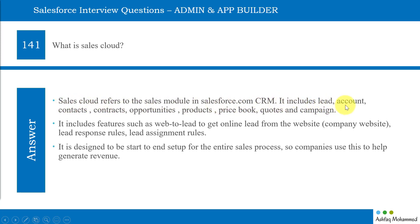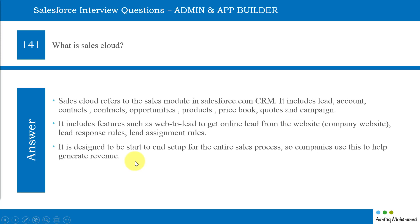Sales Cloud includes leads, contacts, accounts, contracts, opportunities, products, price books, quotes, and campaigns. It includes features such as web to lead to get online leads from a company website, lead response rules, and lead assignment rules. It is designed to be a start-to-end setup for the entire sales process. Companies use this to help generate revenue. In future questions, we'll go into detail on all these things.